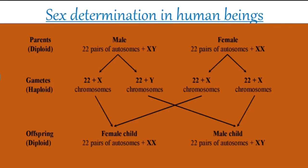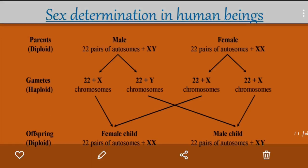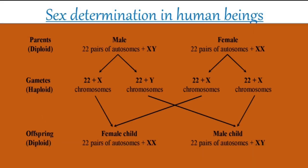Good morning students. Today let us discuss sex determination in human beings. In humans there are 46 chromosomes, which are diploid in nature. During gametogenesis, the chromosome number is reduced to half — only 23 chromosomes will be present in the gamete.